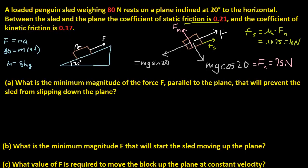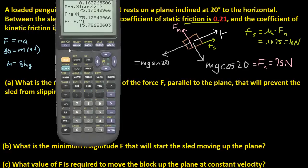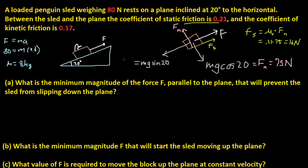I'm trying to figure out all the forces that act along this axis so I can figure out how much force F is needed to make the net force zero. The gravity component along the plane is M times 9.8 times sine 20, which gives us 27 newtons going down the plane. So we have 16 newtons going up and 27 newtons going down.